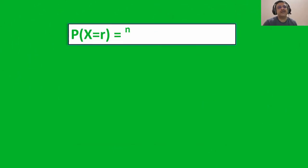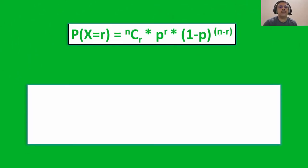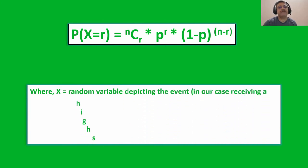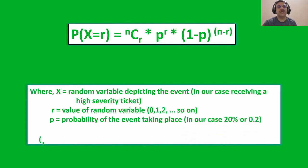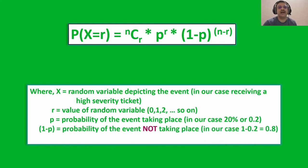Here is the equation for binomial distribution. X is the random variable depicting the event — in our case, receiving a high severity ticket. R is the value of the random variable which could be 0, 1, 2 and so on. P is the probability of the event taking place, in our case 20% or 0.2. 1 minus P is the probability of the event not taking place, in our case 0.8. NCR is the number of ways in which the event can take place.